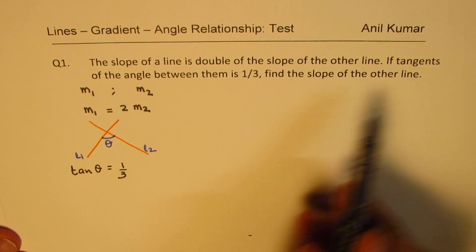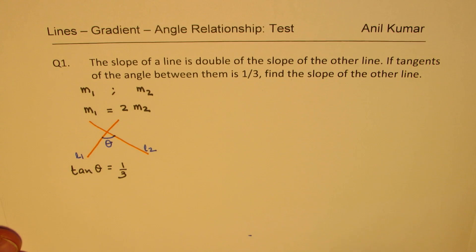Find the slope of other lines. So, m2 is what we need to find. Now, angle between lines formula. What is the formula?